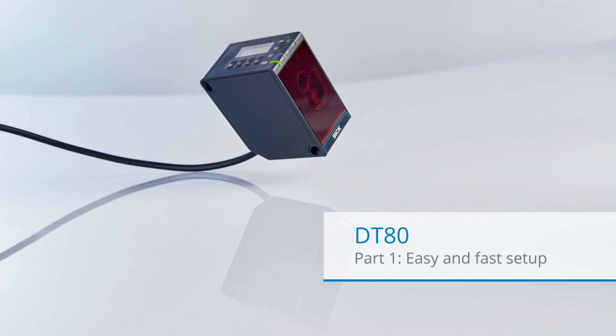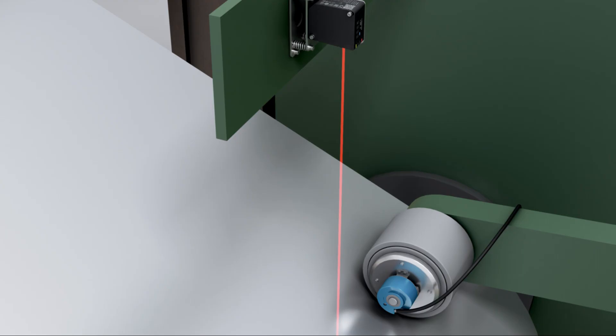In this tutorial, you will learn how easy it is to set up the distance sensor DD80. With its optical time-of-flight measurement, the DD80 can measure distances up to 80 meters on natural targets.